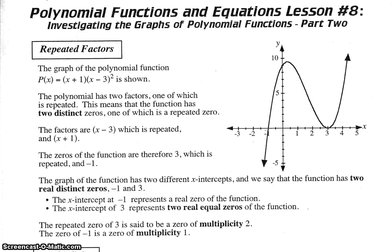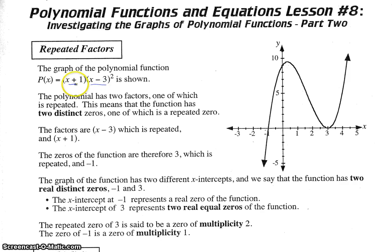We are looking at investigating the graphs of polynomial functions. First of all, we're going to talk about something called repeated factors. So we have the graph of a polynomial function, p of x equals x plus 1 in brackets, times x minus 3 in brackets squared. The polynomial has two factors — x plus 1 and x minus 3 squared — one of which is repeated.